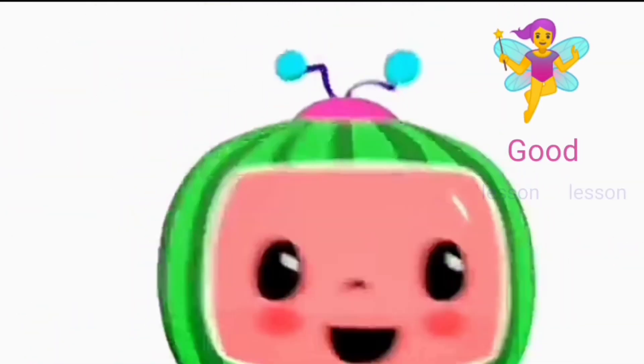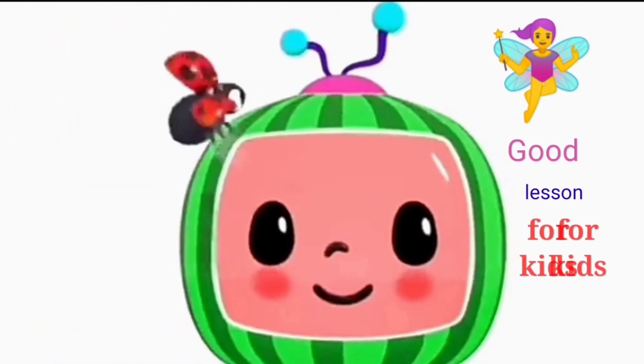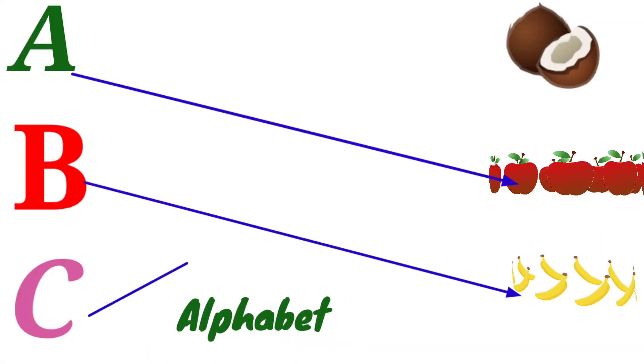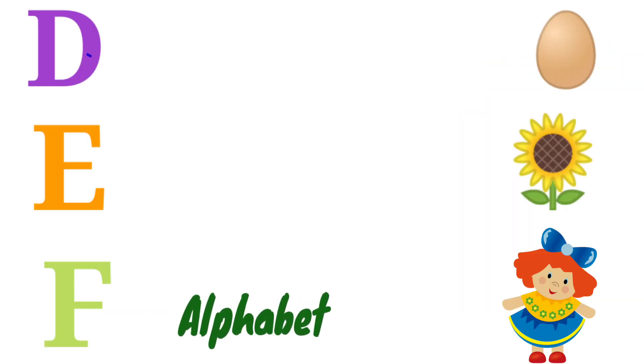Good lesson for kids. A for Apple, B for Banana, C for Coconut, D for Doll.